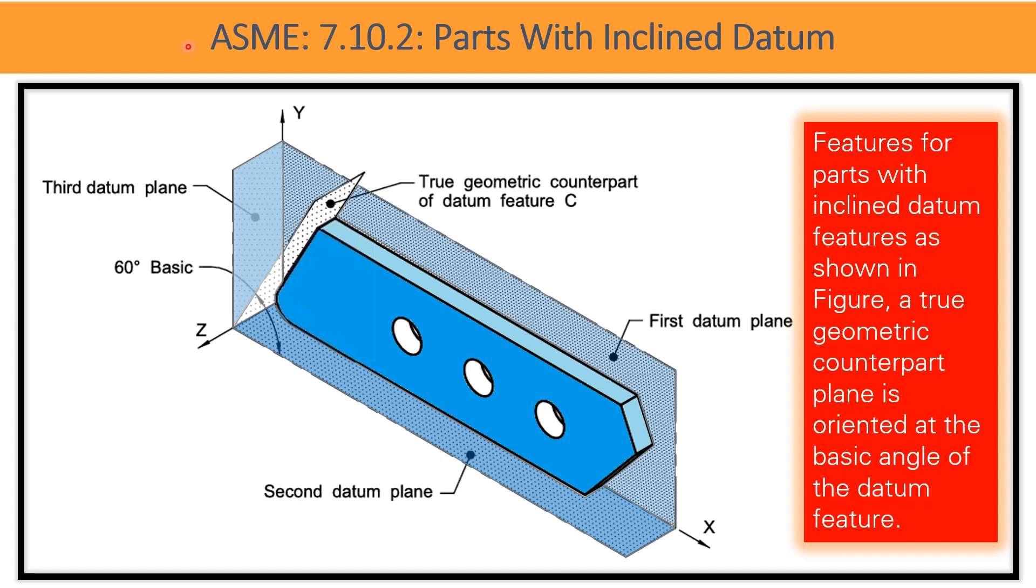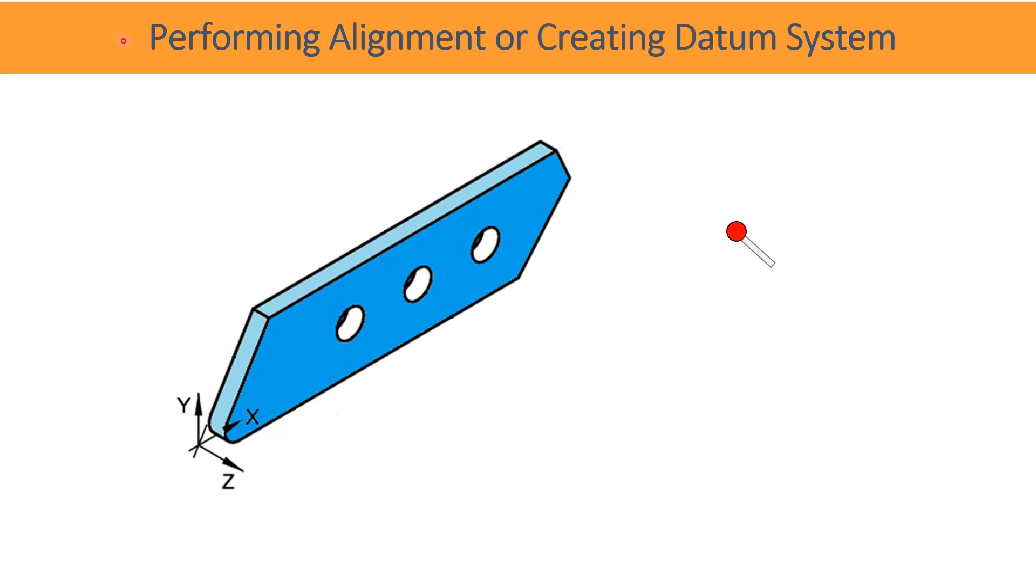So what is the solution in this case to establish mutually perpendicular datums? In the manufacturing or inspection setup, a fixture with true geometric counterpart of datum C at basic angle 60 degrees is prepared. Establishing such datum system with inclined features are very easy on three coordinate measuring machine.